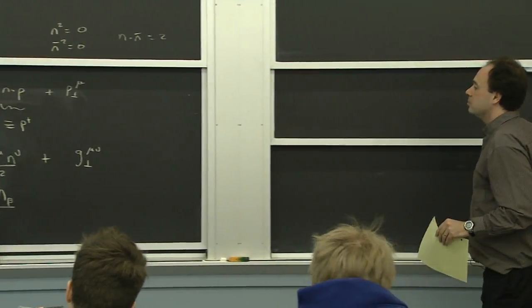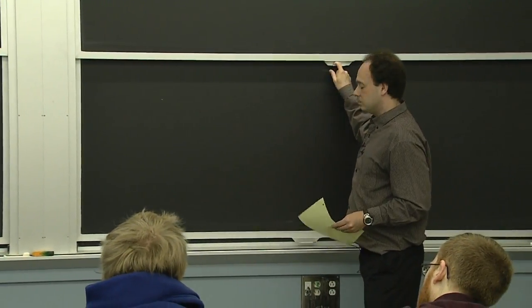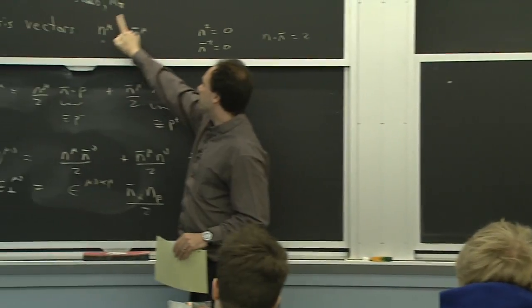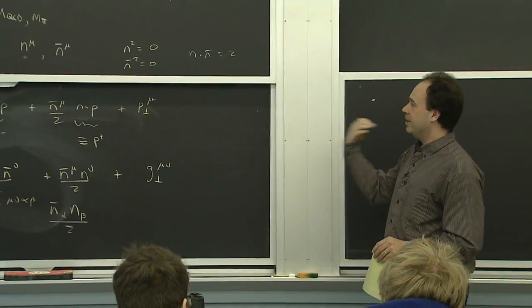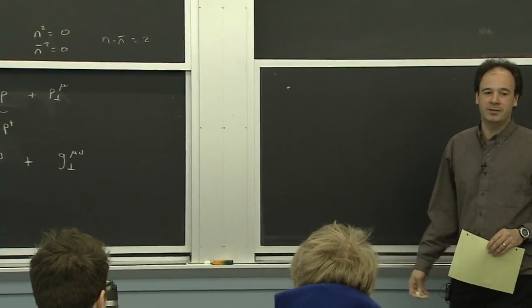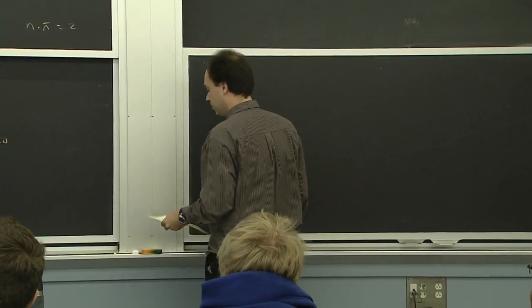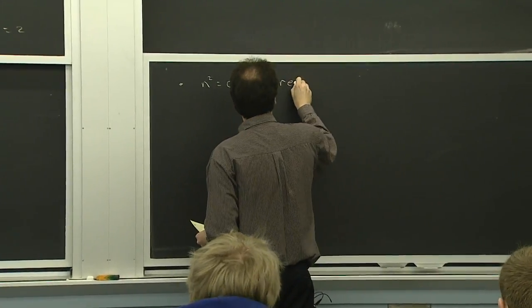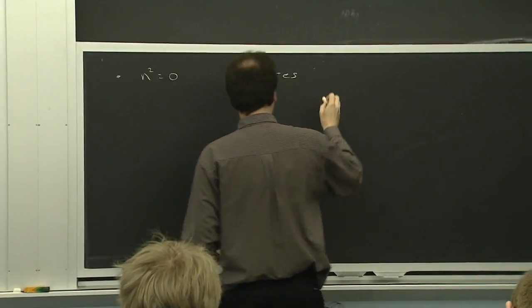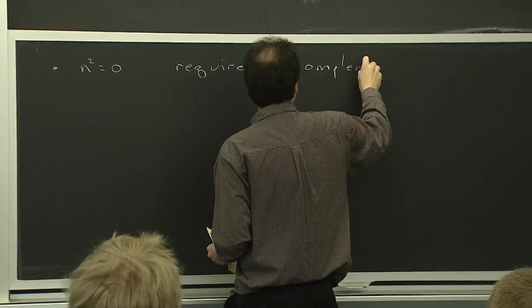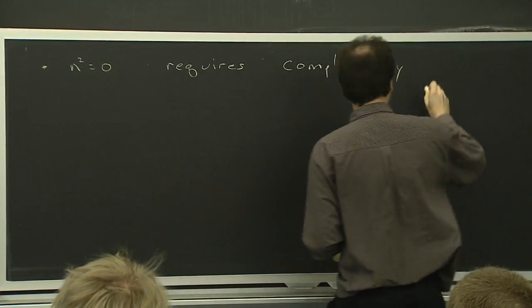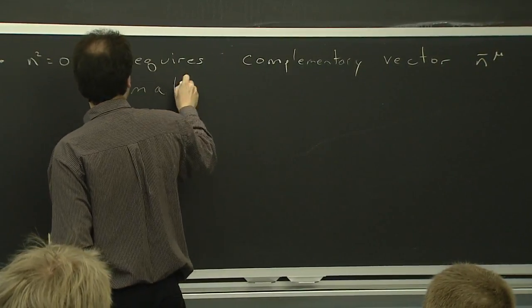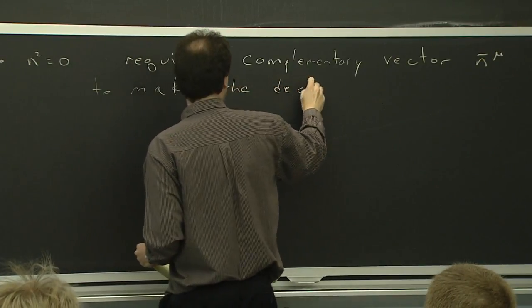So these are the coordinates we're going to use. N here had a physical motivation — the pion was moving in the n direction. N-bar was just a vector we needed in order to define things. If you have some vector where n² = 0 and you want to make a decomposition of coordinates, you're required to introduce a complementary vector n-bar.